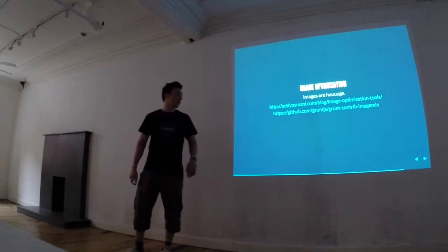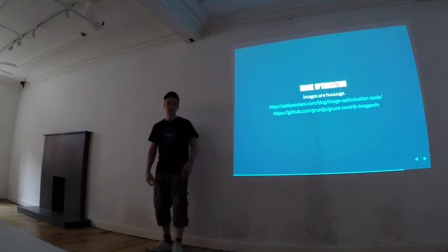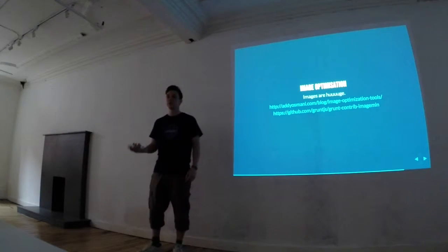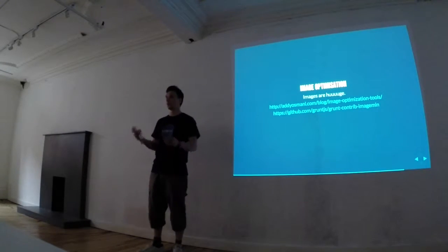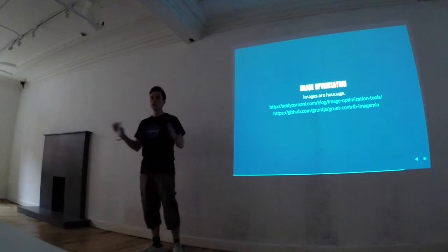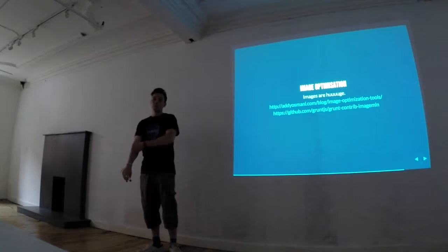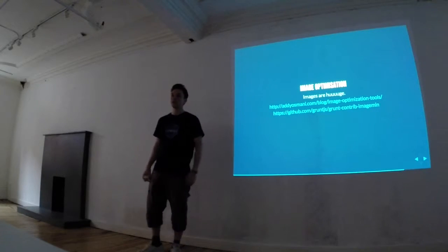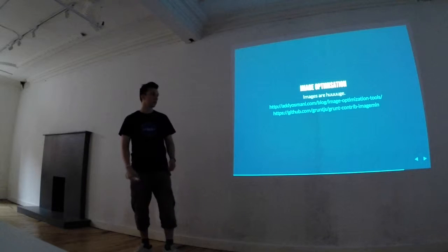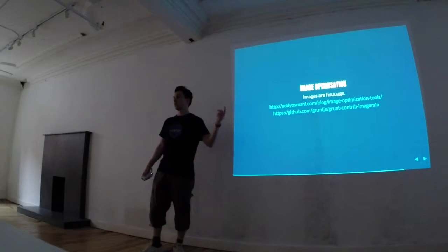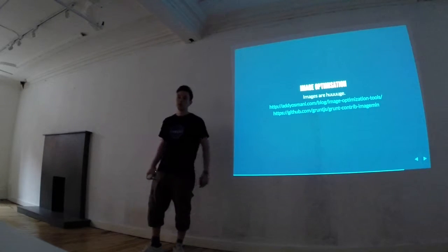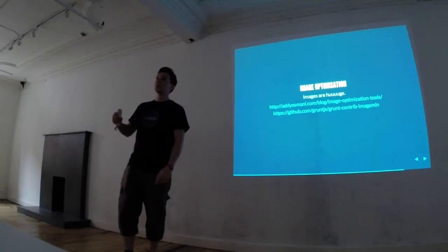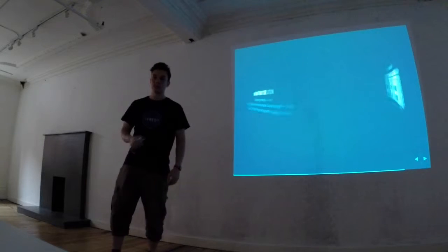There's a really nice blog article about images. Images are really, really big — especially if you're serving retina devices and using JPEG images, sizes can soon add up. There are a lot of tools you can use, like image optim, to get those file sizes down — Photoshop Save for Web, that sort of thing. And also, if you're using Chrome, build tools can manage all of that image optimization automatically, which is really nice.